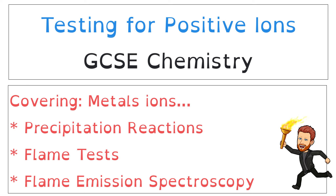Hello and welcome to this GCSE Chemistry video about testing for positive ions, sometimes referred to as cations. In this video we'll cover three different ways of testing for metal ions, starting with precipitation reactions, moving from there into flame tests, and finishing by looking at flame emission spectroscopy.